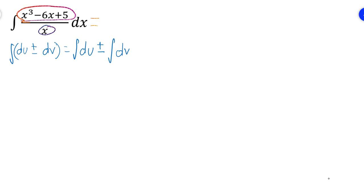And we know that this can be rewritten — this is a pretty simple math rule. We know that this is equal to each one of the terms that we have up here divided by the denominator. So this would be minus 6x over x, plus 5 over x. So this is a pretty simple rule that is going to help us determine the integral of this problem.